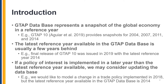The latest reference year available in the database is usually a few years behind. For example, the final release of GTAP database version 10 was issued in 2019 with the latest reference year 2014. If a policy of interest was implemented in a later year than the latest reference year available in the database, we may consider updating the database.